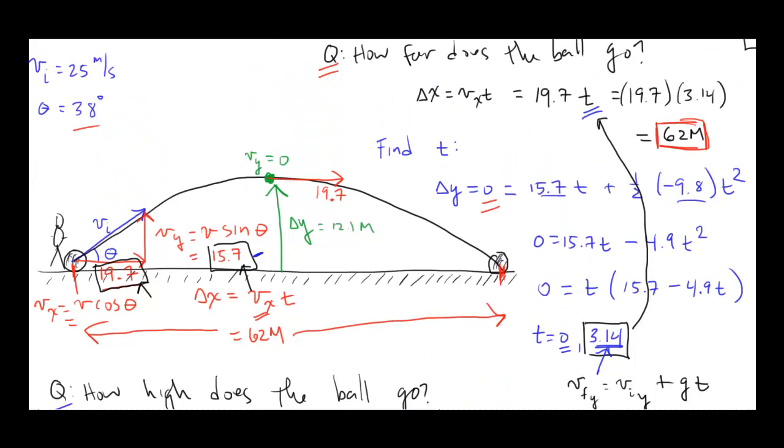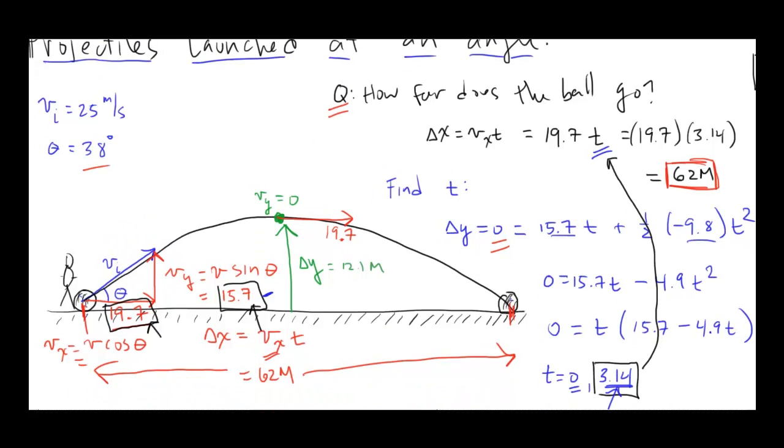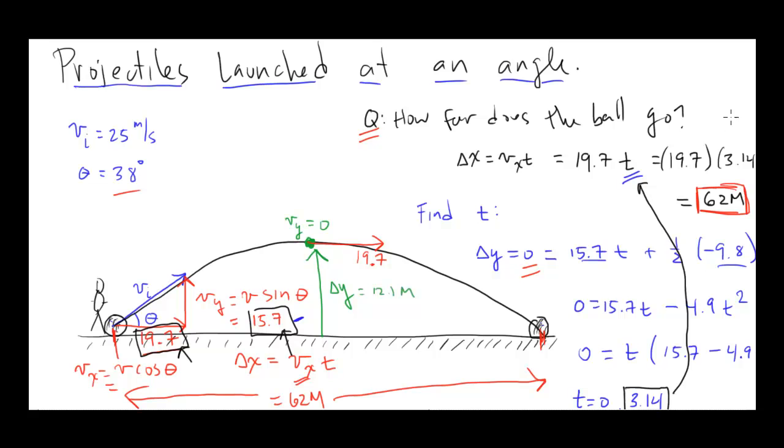All right. So that's an introduction to these problems where projectiles are launched at an angle. The main difference here is that the initial y velocity is not zero. And moreover, you have to find, in many cases, you need to find the x and y velocities from the get-go. I will point out that it could be the case where the projectile is launched down at an angle. You can go through the exact same logic and work through a problem where the projectile is launched at an angle downward. Sometimes the delta y is not zero, so we will see some tricky problems where delta y is not zero. But in general, the problems have this form. We will be doing more practice with this in class tomorrow.